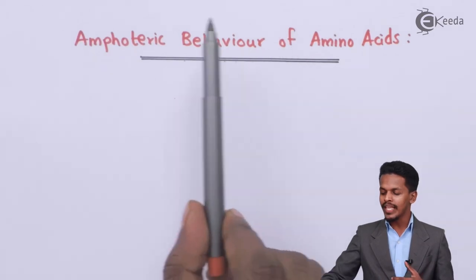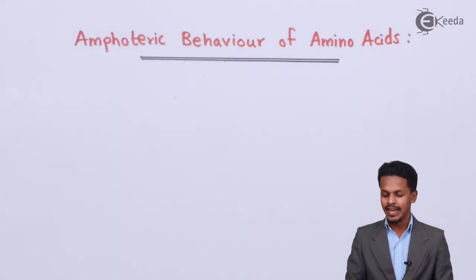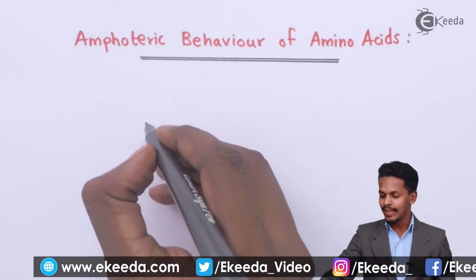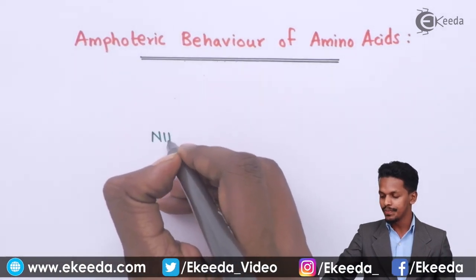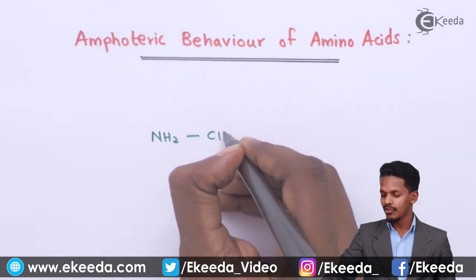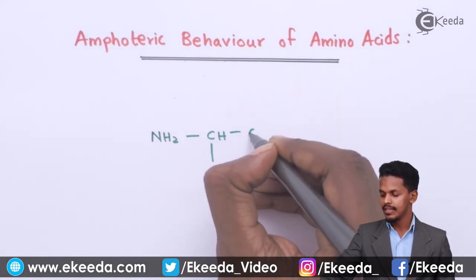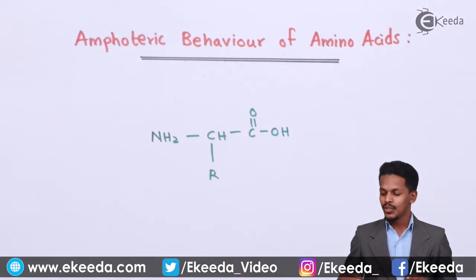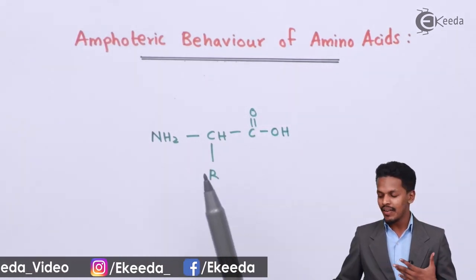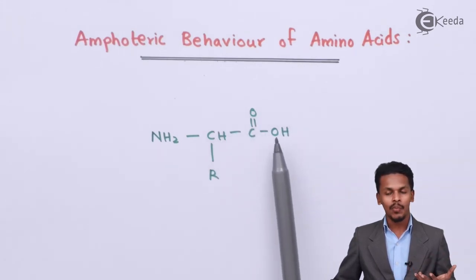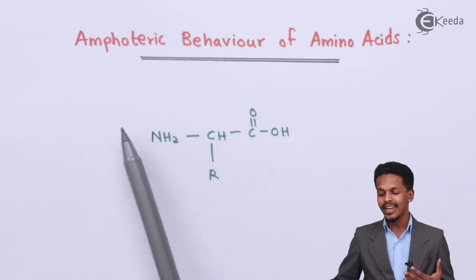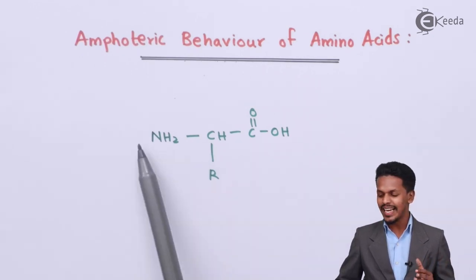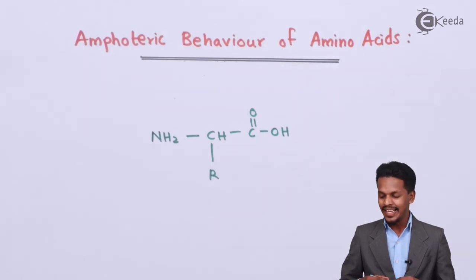In this topic I'm going to talk about the amphoteric behavior of amino acids. Using the general formula for the amino acid — NH₂-CHR-C(=O)-OH — we can see there is only one carboxylic group and only one NH₂ group. That means one is acting like a base while the other is acting like an acid, so they can neutralize each other.